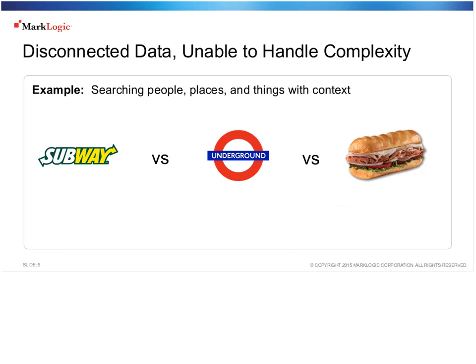Here's another example illustrating the importance of context. Relationships can be understood as patterns between entities that fall into a few categories: things that are equal, things that are similar, or things that are part of a bigger thing — hierarchical part-whole or part-containment relationships.